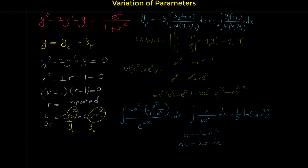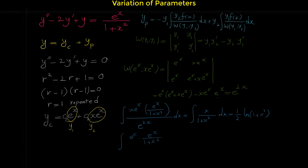Now let's calculate the other integral: the integral of (y₁·f(x) / Wronskian) dx, which is the integral of (e^x · e^x/(1+x²)) / e^(2x) dx. The e^(2x) in the numerator cancels with e^(2x) in the denominator, leaving the integral of 1/(1+x²) dx. From standard integral formulas, this equals arctan(x).